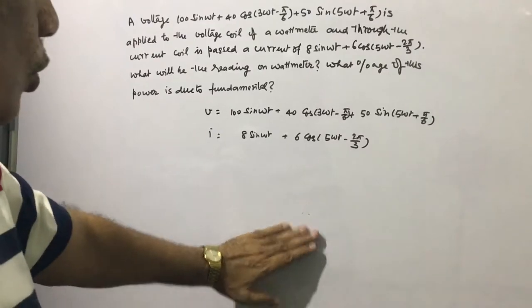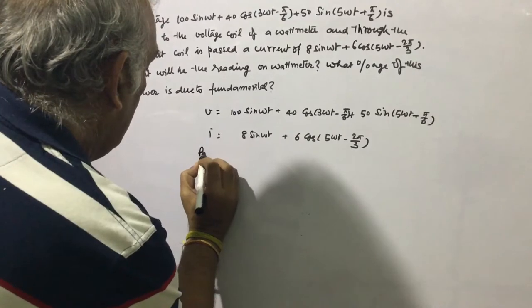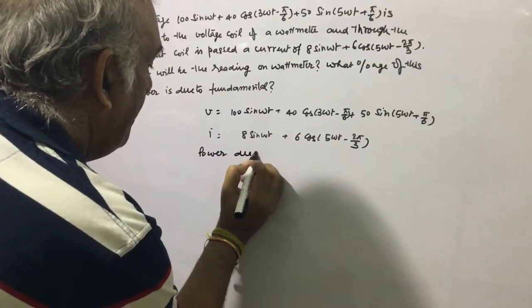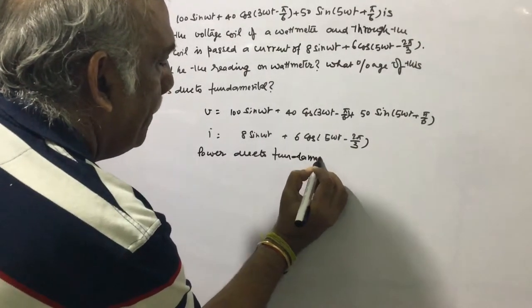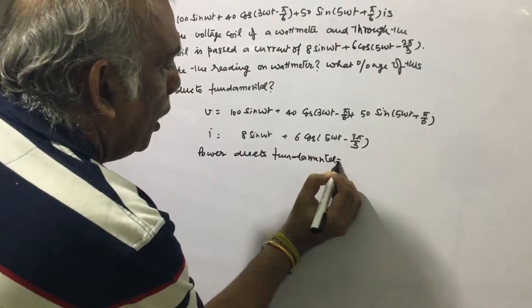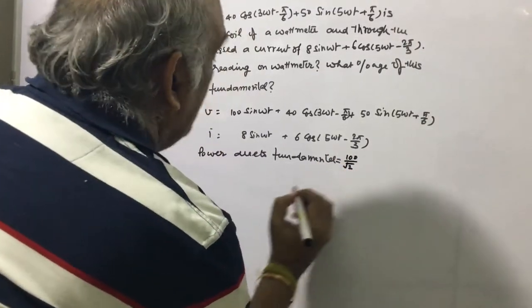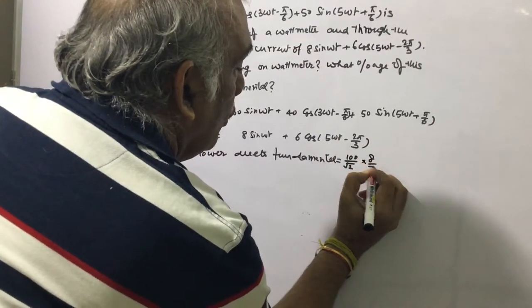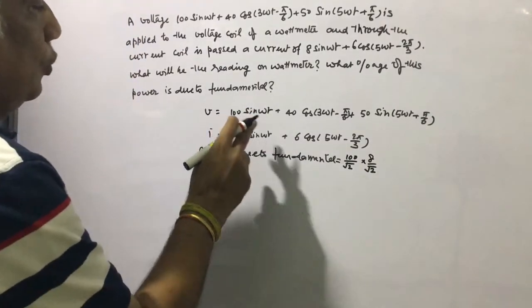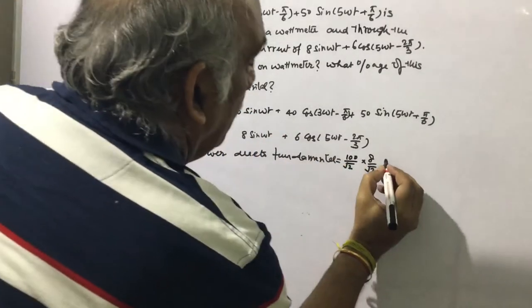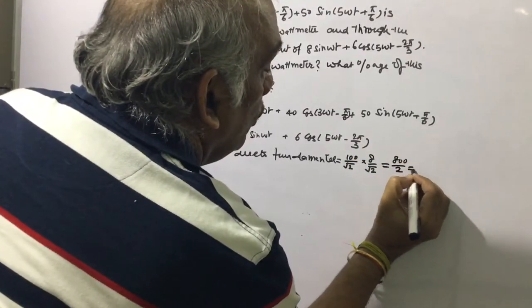Power due to the fundamental: V1 is 100 and I1 is 8. The RMS value of voltage is 100/√2 and RMS current is 8/√2. Since the fundamental components are in phase, cos(0) = 1. So power due to fundamental P1 = (100 × 8) / 2 = 800 / 2 = 400 watts.